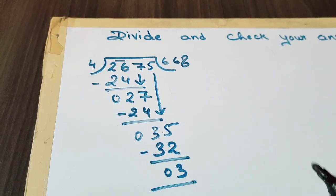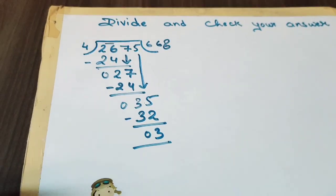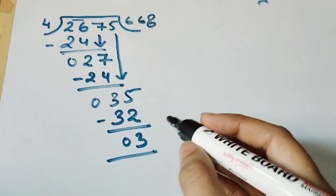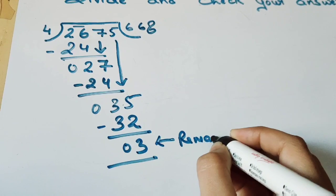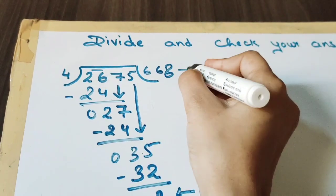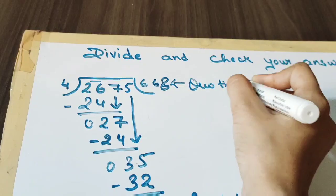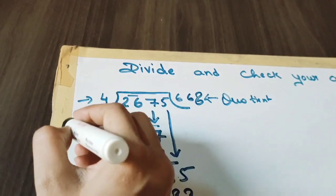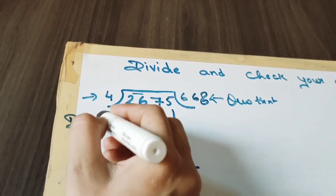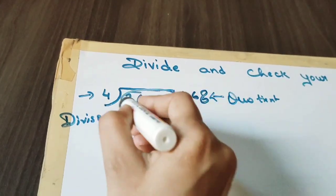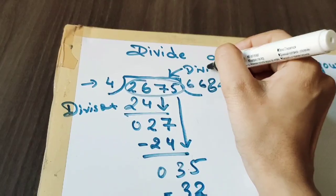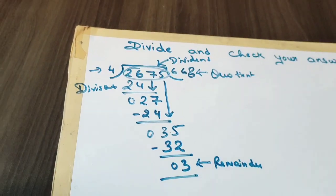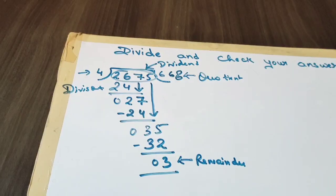So now let's write the remainder and quotient. This is the remainder, this is the quotient. This is the divisor and this number is called the dividend.